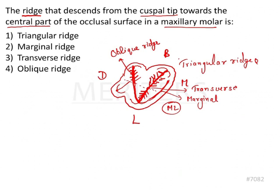In the case of the maxillary first molar, it will be from the distal buccal cusp to the mesial lingual cusp. So by all this discussion we have come to the conclusion that the triangular ridges are those elevations on the cuspal surface which start from the cusp to the center of the tooth. So our answer for this will be triangular ridge.